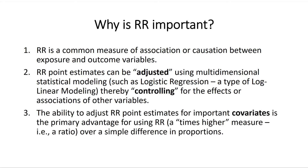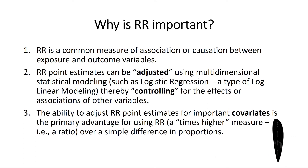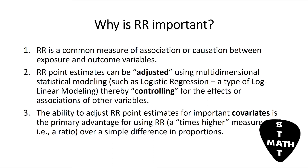Three: The ability to adjust relative risk point estimates for important covariates is the primary advantage of using relative risk — a times-higher measure, that is, a ratio — over a simple difference in proportions.